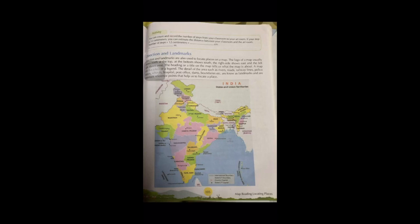Direction and landmarks are also used to locate places on the map. A map usually shows north at the top, at the bottom south, the right side shows east, and the left side shows west.